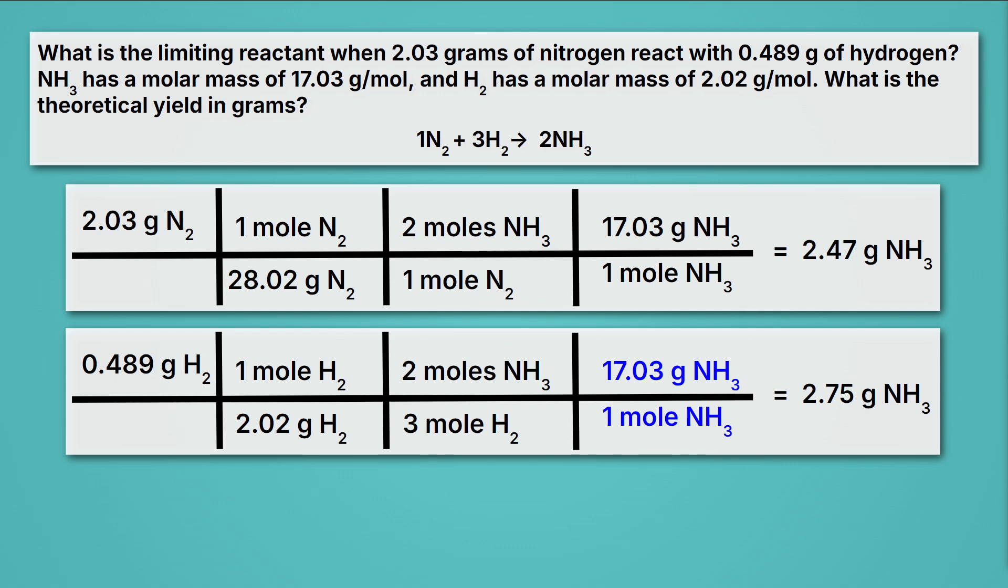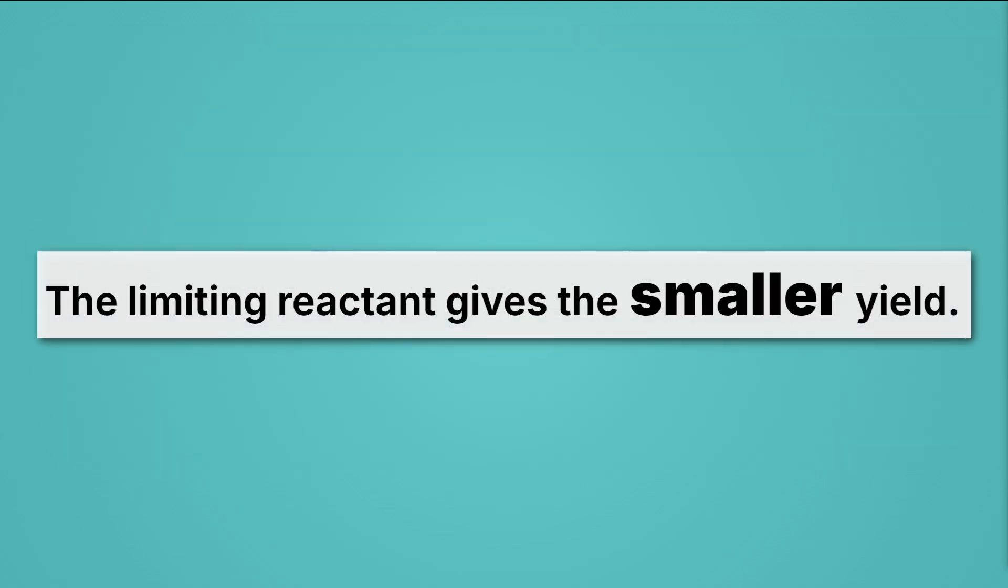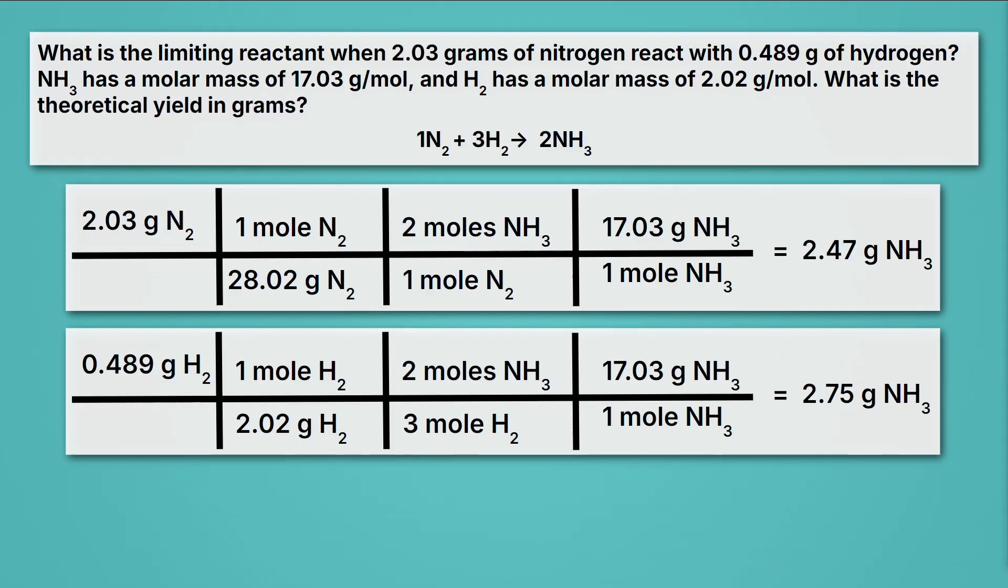Now, keep in mind what we've actually done here. We've taken two piles of ingredients, some hydrogen and some nitrogen, and we've seen how much product we can make from each one. Here's an important fact to remember. The limiting reactant gives the smaller yield. The limiting reactant is whatever runs out first, and it gives us the smaller number.